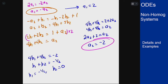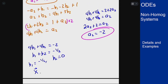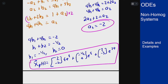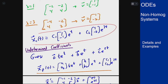Putting all this together gives the particular solution: [2, -2]·t·e to the t, plus [-1/2, 0]·e to the t, plus [2, -3]·e to the 2t. That is the non-homogeneous particular solution. You then add the homogeneous solution to get the full general solution.